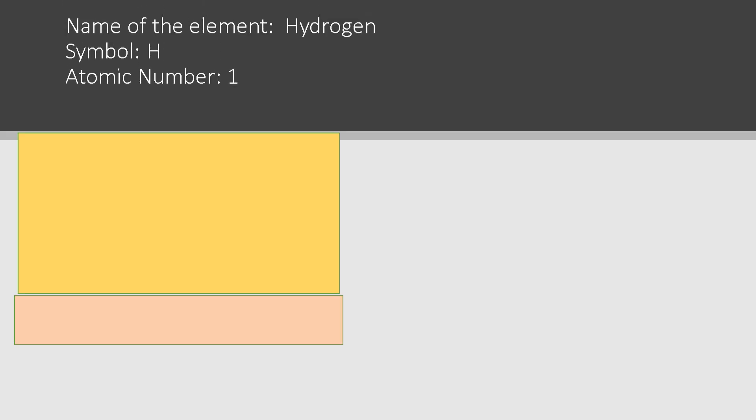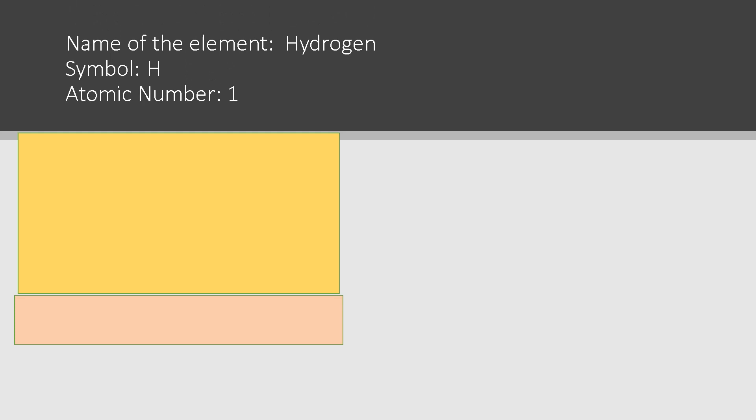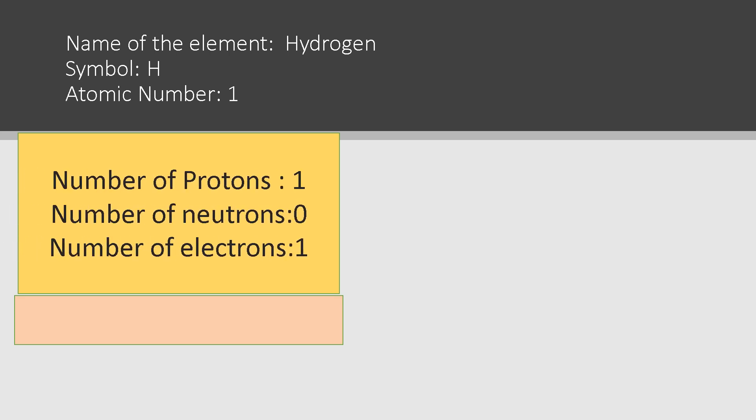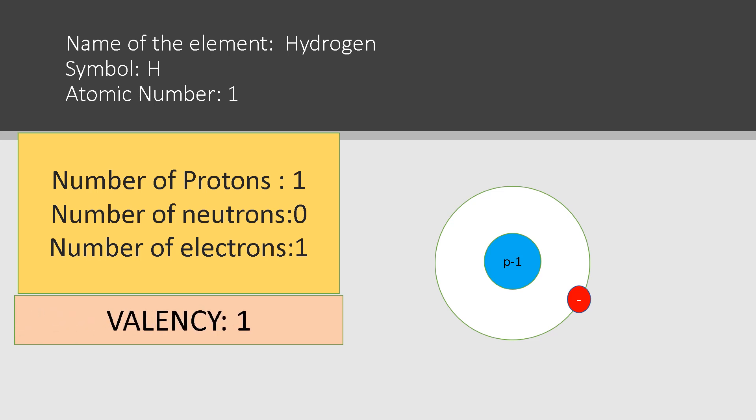The first element is hydrogen. The symbol is H and the atomic number is one. The number of protons is one, there are no neutrons, and the number of electrons is one. Since we have one electron in the outermost orbit, the valency is one.